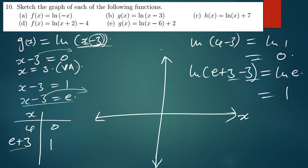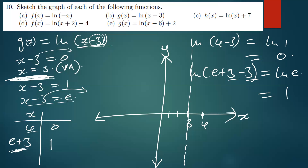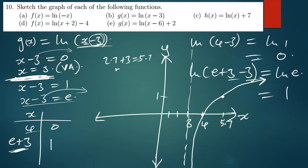Sketching is easy with these points. Draw the vertical asymptote at x equals 3. Plot (4, 0) and (5.7, 1). The curve is oriented in that direction — it's as simple as this. I don't know if there's anything difficult in doing this.